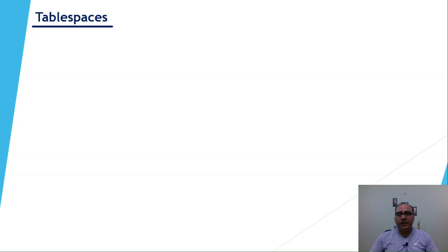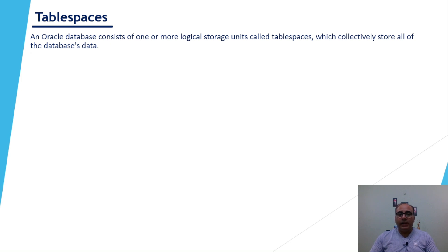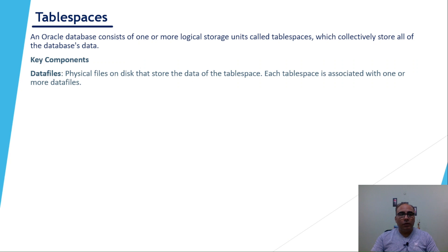Let's understand what tablespaces are in Oracle. Basically, one or more data files form a logical storage unit called a tablespace, and these tablespaces contain the database data. The first key component is data files — these are physical files stored on disk that contain the database data. Each tablespace is associated with one or more data files; at least one data file must be associated with a tablespace.